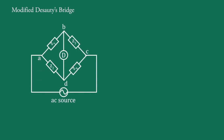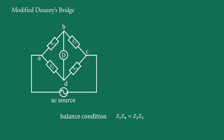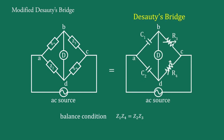The basic SC bridge is drawn with its balance condition written as Z1 · Z4 equal to Z2 · Z3, where D is the detector and this is an AC source. In the Dissotis bridge, C1 and C2 are taken as perfect capacitors.